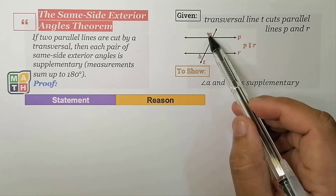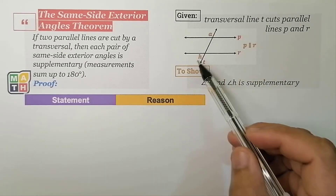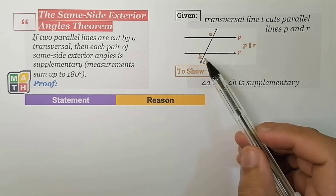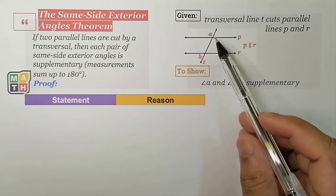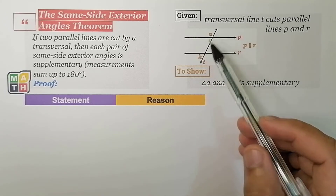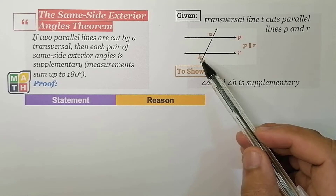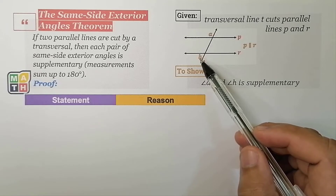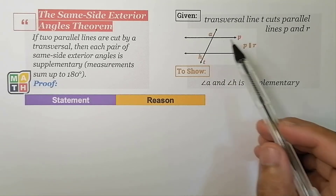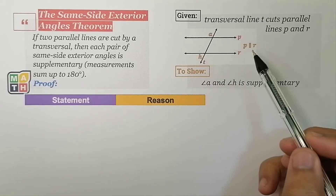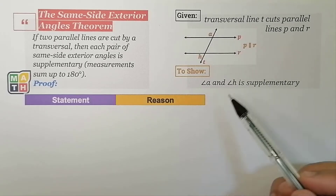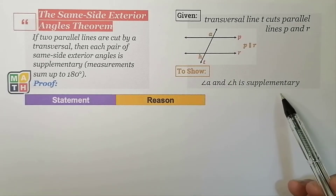In this figure, angle A and angle H, per definition, are considered to be Same Side Exterior Angles. We need to show that if lines P and R are parallel, they should be supplementary.